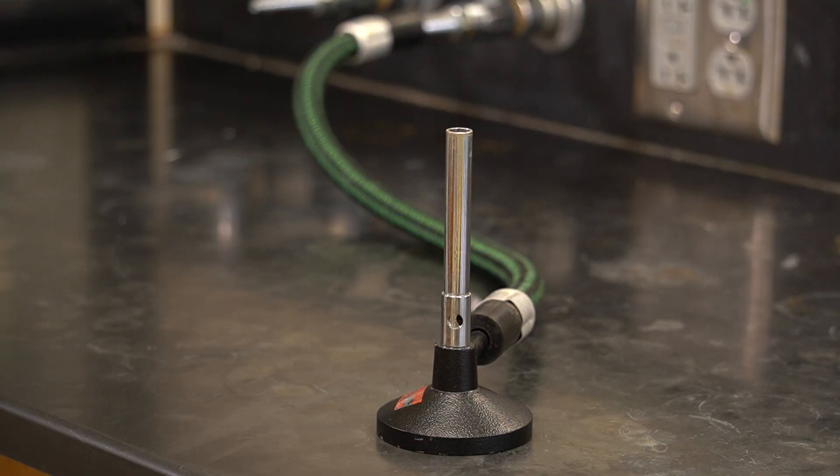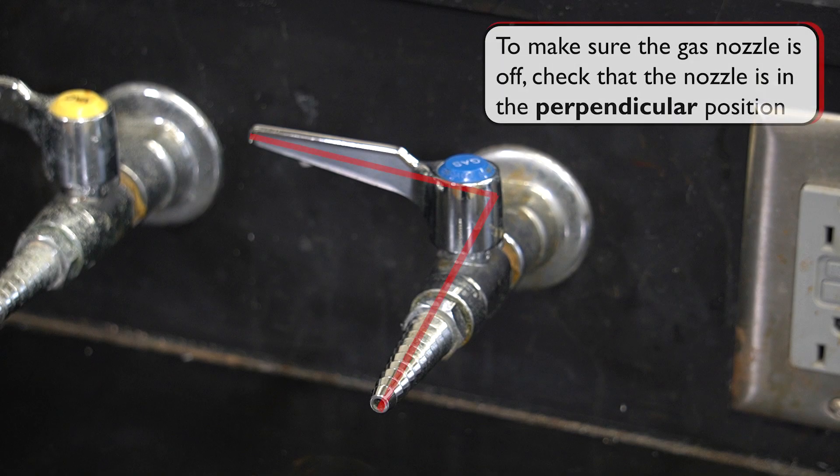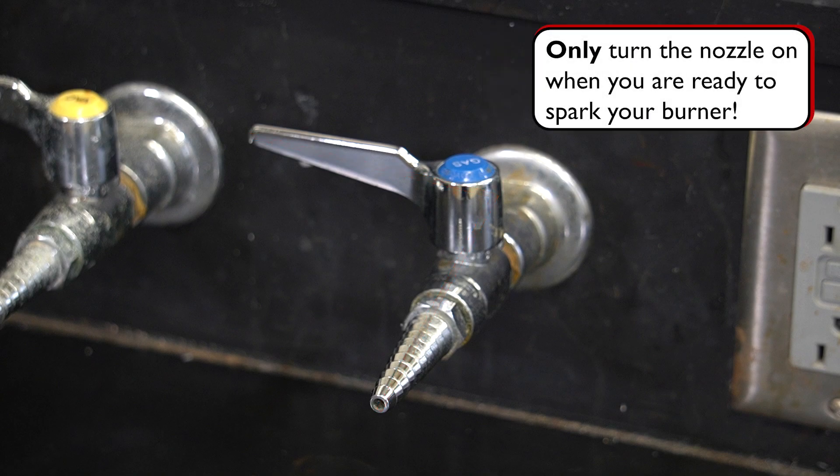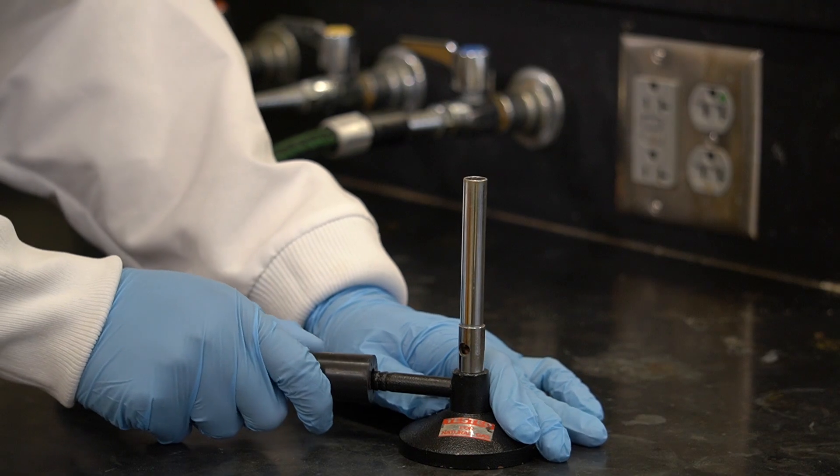Now, let's start the assembly of the Bunsen burner. First, we will want to check the gas nozzle. Anytime a Bunsen burner is not in use, we want to make sure that the gas nozzle is off and no gas is leaking into the room. We do not want to turn on the nozzle until we are ready to spark our Bunsen burner. Connect the tubing from the burner's gas inlet to the gas nozzle.